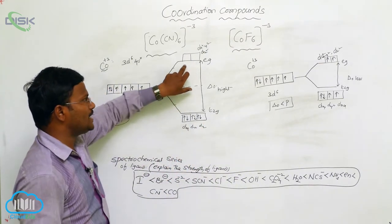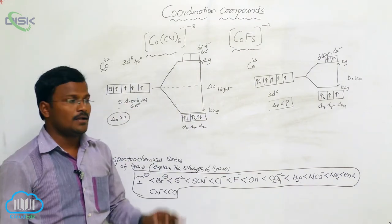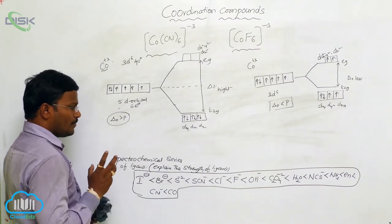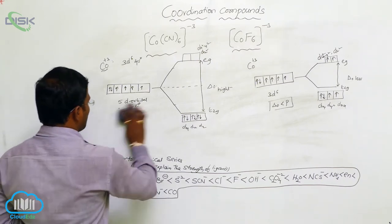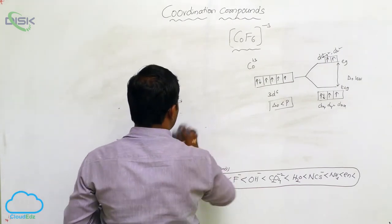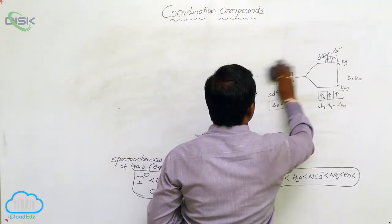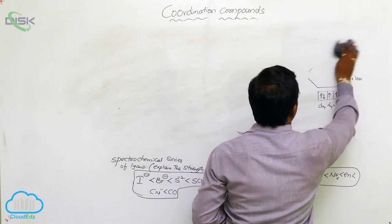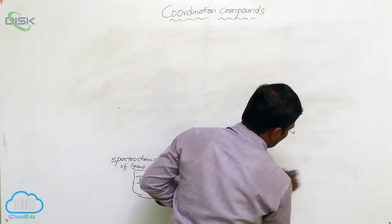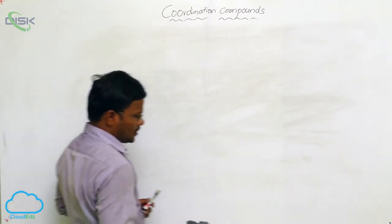In cases where there are empty vacant d-orbitals, it produces inner orbital complexes. All of this depends upon the strength of the ligand. In the presence of strong field ligands, pairing of electrons takes place and provides inner orbital complexes. In the presence of weak field ligands, pairing of electrons does not take place and produces outer orbital complexes with paramagnetic character.